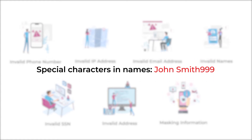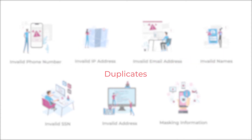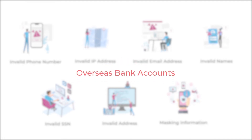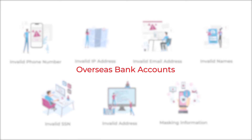Special characters in names — like "John Smith 9999" — that's not a name. Or duplicates or overseas bank accounts. All of these add to the final fraudulent score of a claim.